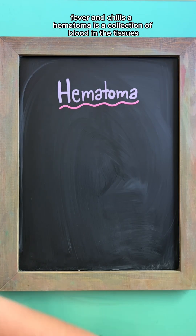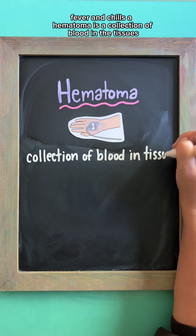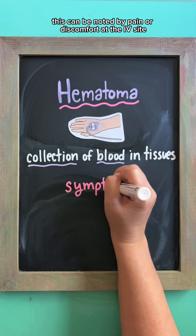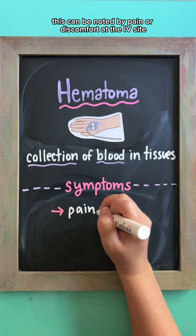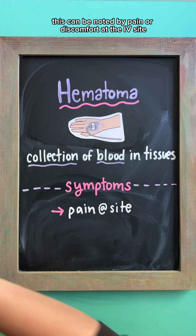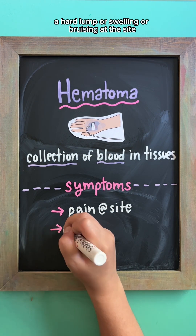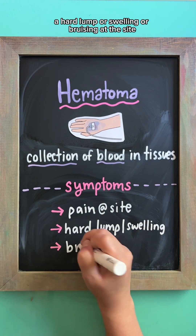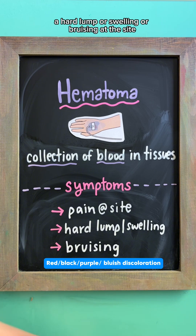A hematoma is a collection of blood in the tissues. This can be noted by pain or discomfort at the IV site, a hard lump or swelling, or bruising at the site.